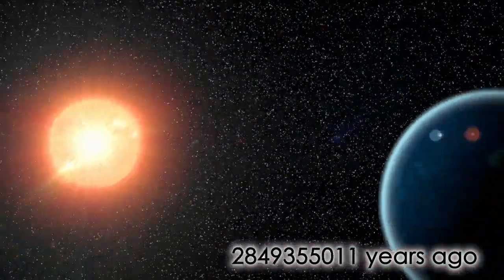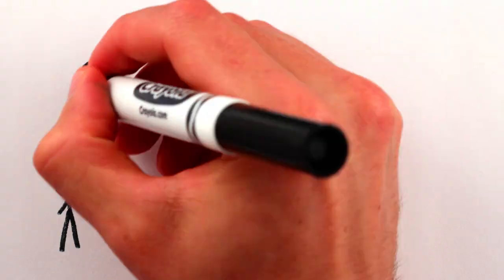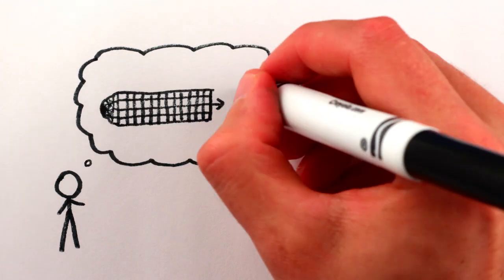Then expansion slowed, the universe cooled, stuff happened, and after a few billion years, here we are. One thing we still don't know is why this everywhere stretching happened.